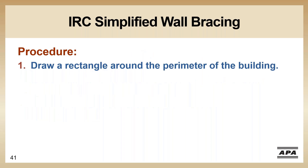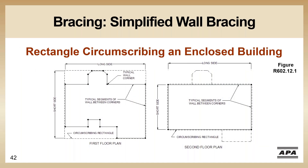The procedure for the IRC simplified: Step one, draw a rectangle around the perimeter of the building. This is the first and second floor of a plan, and you may notice the rectangle is a different size on the first floor than the second floor. The rectangle has to include all offsets or projections — if you have a sunroom or garage at the first level, the rectangle must include all of that. Open structures like a carport or deck don't need to be included. Once you have your rectangles drawn, note the dimensions of the long side and the short side — that's what you take into your tables.